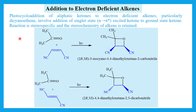Next is the addition to electron-deficient alkenes. Photocycloaddition of aliphatic ketones to electron-deficient alkenes, particularly dicyanoethylene, involves the addition of the singlet n to π* excited ketone to the ground-state alkene. The reaction is stereospecific and the stereochemistry of the alkene is retained, so cis-alkene produces cis-product and trans-alkene produces trans-product.